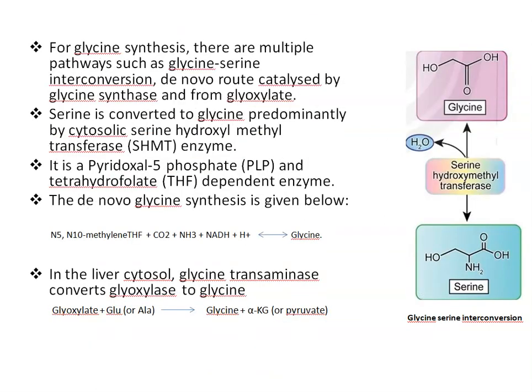For glycine synthesis, there are multiple pathways, such as glycine-serine interconversion, de novo route catalyzed by glycine synthase enzyme, and also from glyoxylate. In glycine-serine interconversion, serine is converted to glycine by the cytosolic enzyme serine hydroxylmethyltransferase (SHMT). This enzyme is PLP and THF-dependent: PLP is pyridoxal-5-phosphate, and THF is tetrahydrofolate.